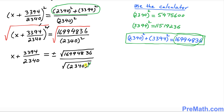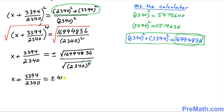This square and square root cancel on the denominator side. So we get: x plus 3394 over 2340 equals positive or negative 4122.48 divided by 2340.